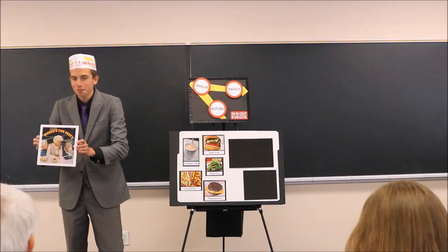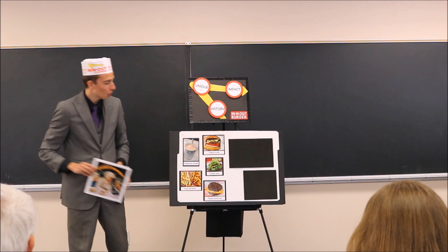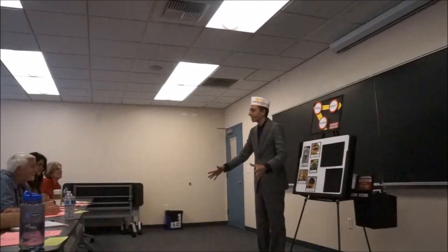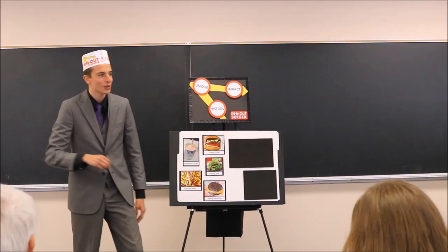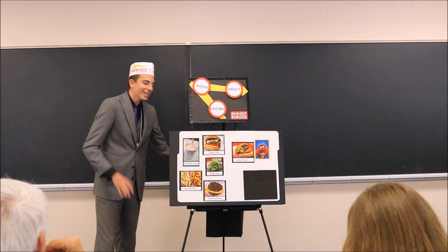Now, there's no burger on the veggie burger. It's simply a bun with lettuce, tomato, and onions. We can also offer a flying Dutchman. Now, a flying Dutchman is compiled of two meat patties with two slices of melted cheese in the middle. However, by far the most popular item of the secret menu is animal style.